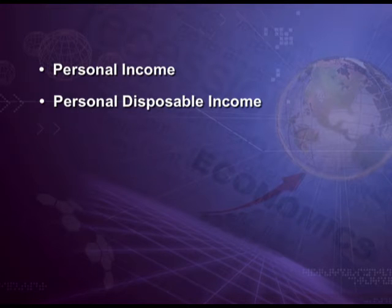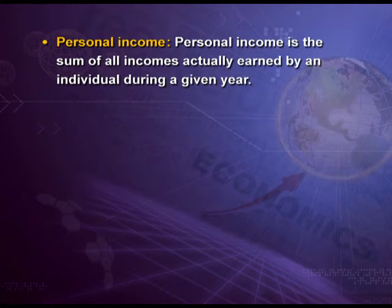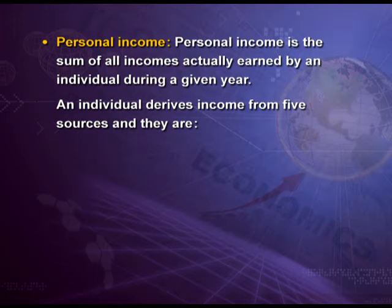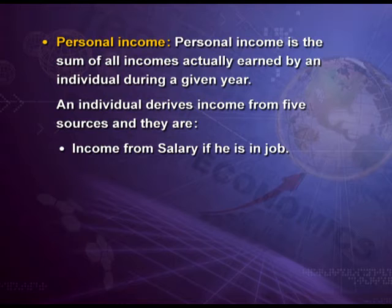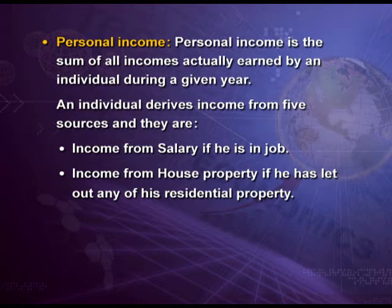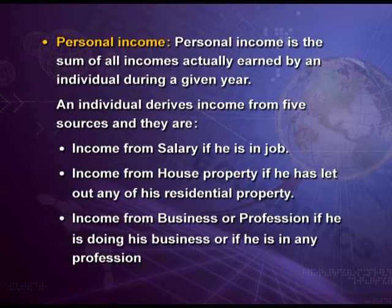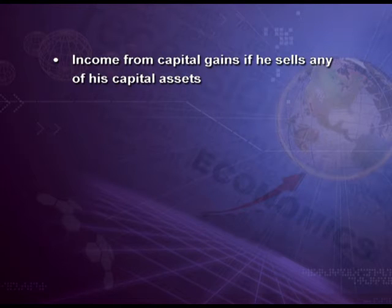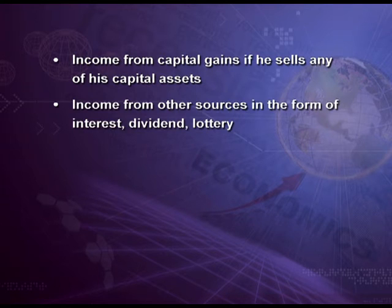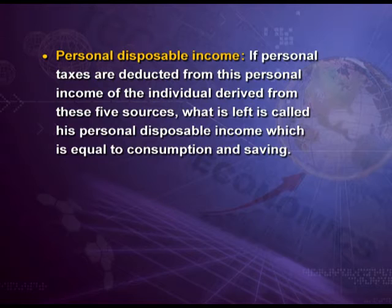Let us discuss two more concepts: personal income and personal disposable income. Personal income is the sum of all incomes actually earned by an individual during a given year. An individual derives income from five sources: income from salary if in a job, income from house property if letting out residential property, income from business or profession, income from capital gains if selling capital assets, and income from other sources such as interest and dividends. If personal taxes are deducted from this personal income, what is left is called personal disposable income, which is equal to consumption plus saving.